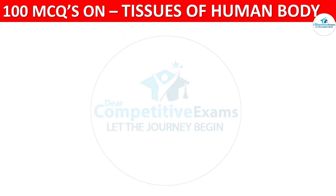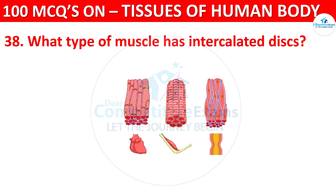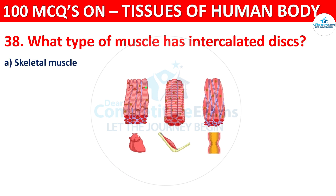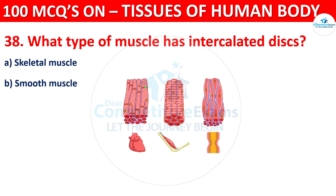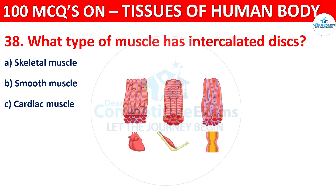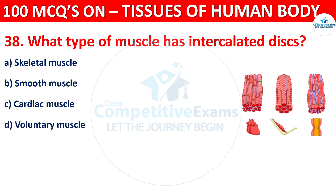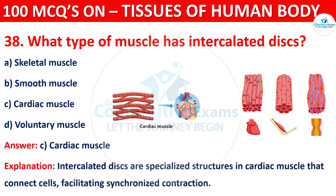Question number 38. What type of muscle has intercalated discs? Options are Skeletal Muscle, Smooth Muscle, Cardiac Muscle, or Voluntary Muscle. The correct answer is C, that is Cardiac Muscle. Intercalated discs are specialized structures in cardiac muscle that connect cells, facilitating synchronized contraction.